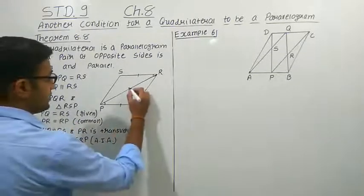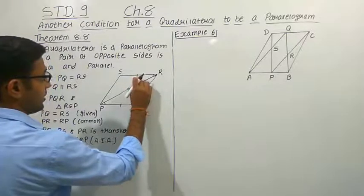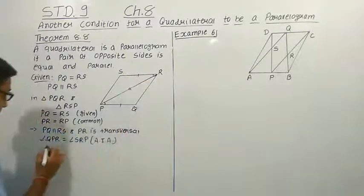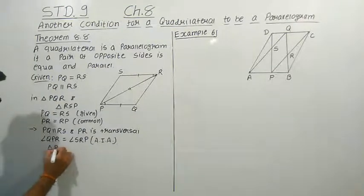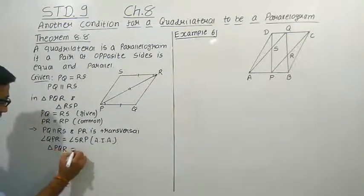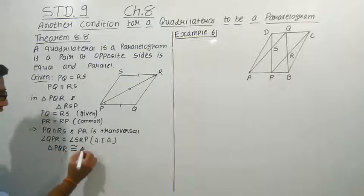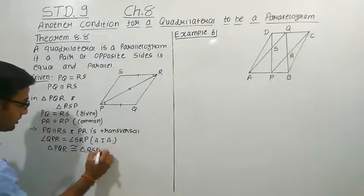Now this side is there, this side is there. So by the Side-Angle-Side criteria, we can write down that triangle PQR is congruent to triangle RSP.